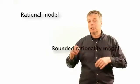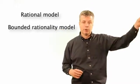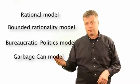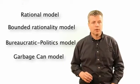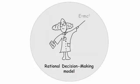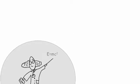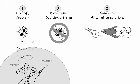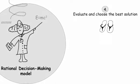The first one is the rational model. In the rational decision making model, we assume that the organization acts rationally and is a single actor, maximizing the best solution possible by choosing amongst a set of alternatives. The rational process starts by identifying a problem, determining the decision criteria, then generating alternative solutions and evaluating the best one, and then implementing it.